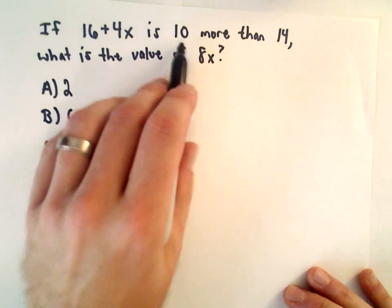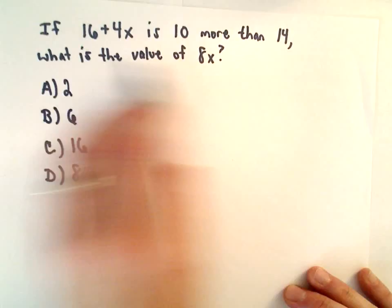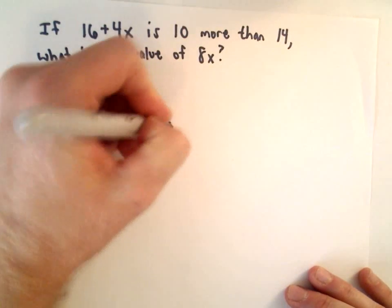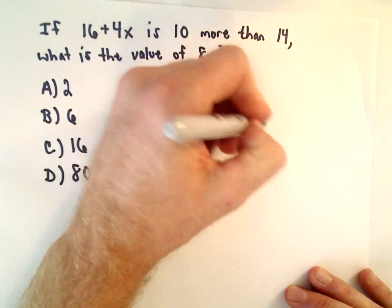Okay, so 16 plus 4x is 10 more than 14. We have to be careful and make sure we set up the correct equation there, so 16 plus 4x...